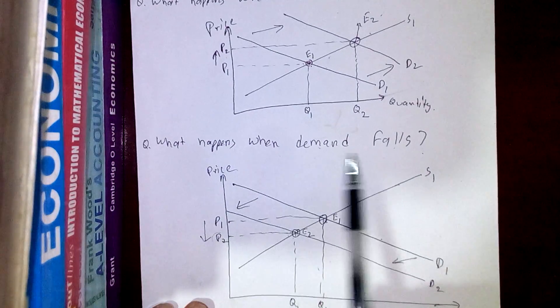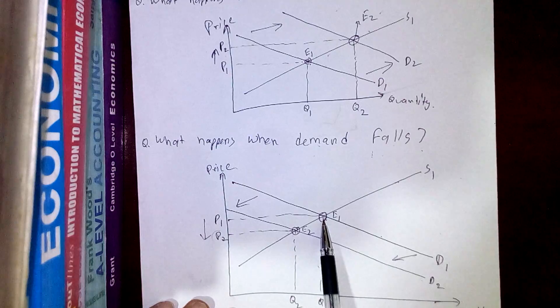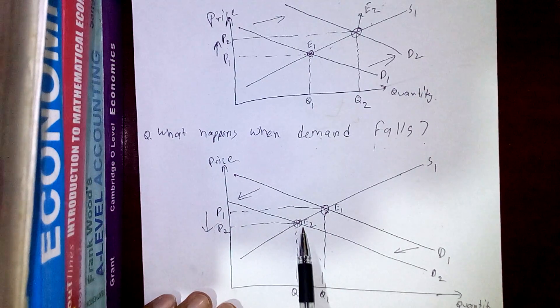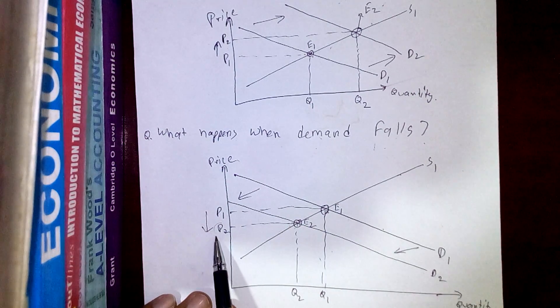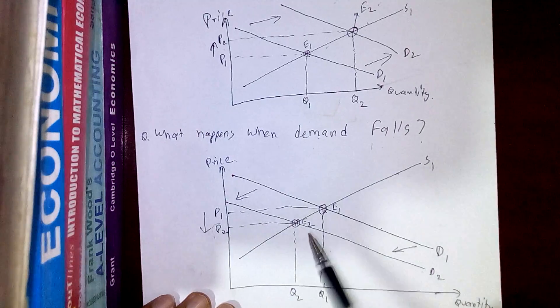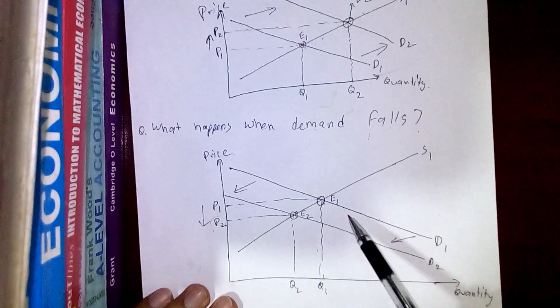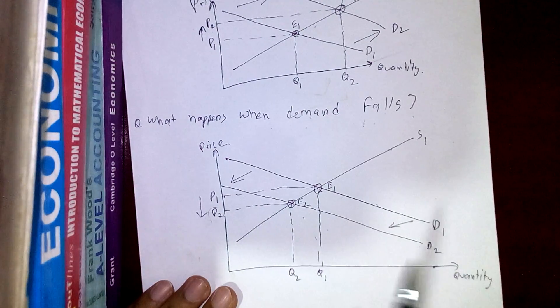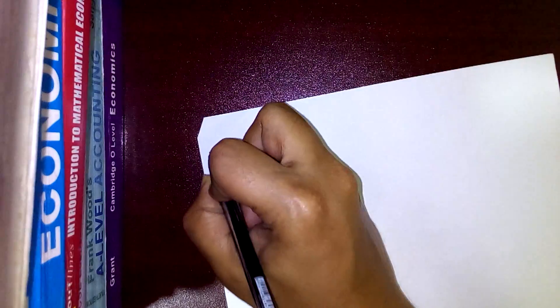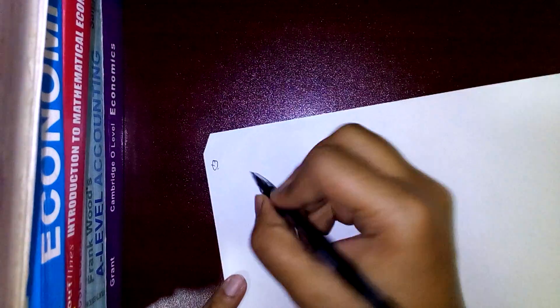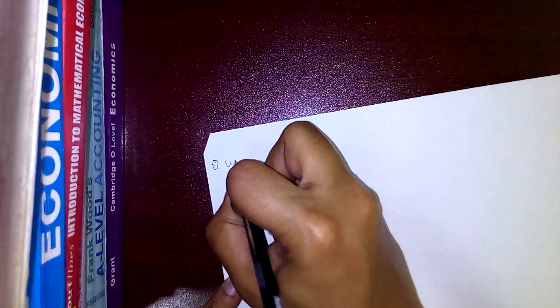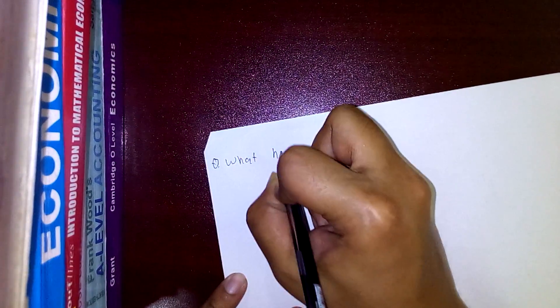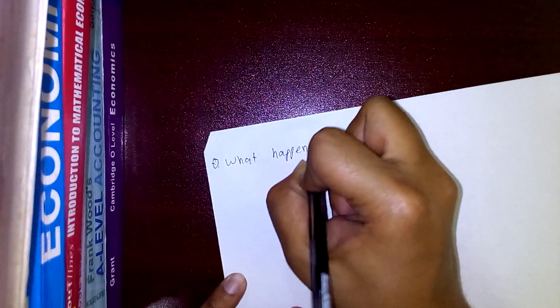At the new equilibrium E2, the price is P2 and quantity traded is Q2. We can see that P2 is lower than P1, so price has fallen. When demand falls, the demand curve shifts leftward and price falls from P1 to P2.